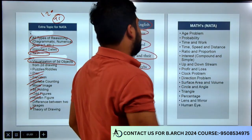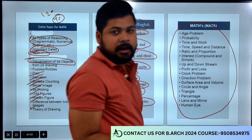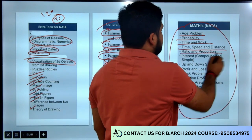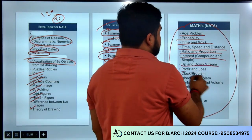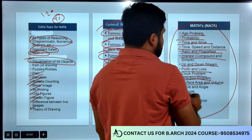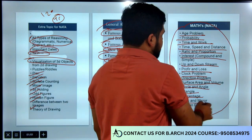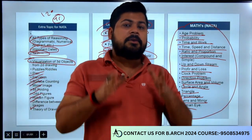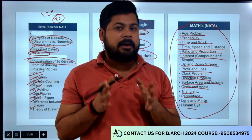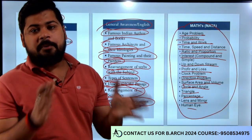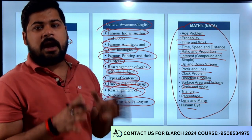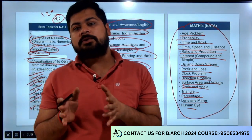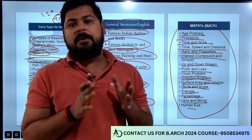Basic math जो होने वाला है, वो same पिछले बार का syllabus है जैसे average problem, probability, time and work, time-speed and direction, ratio and proportion, integers, upstream and downstream, profit and loss, clock problems, direction, surface area, volume, circle, angle, triangle, percentage, lens, mirror। Basic math भी आपके 10-15 नंबर के रहने वाले हैं। जब तक paper नहीं आता NATA का, तो paper analysis पे video available नहीं हो सकती। अगर आप अपनी preparation को boost करना चाहते हैं, तो आप हमारे course को join करके हमारे साथ मिलकर अपनी preparation कर सकते हैं।